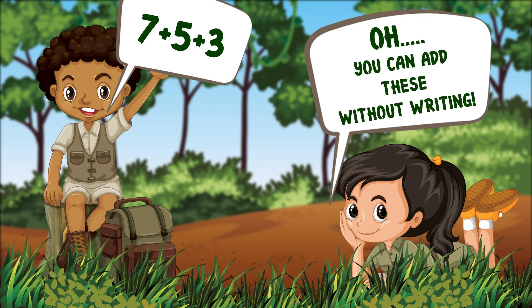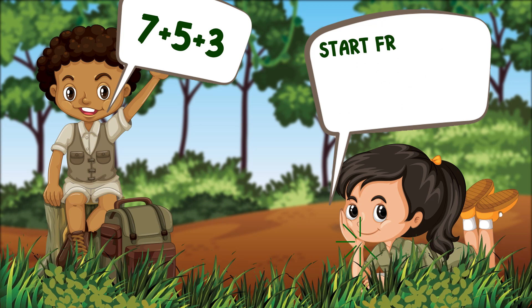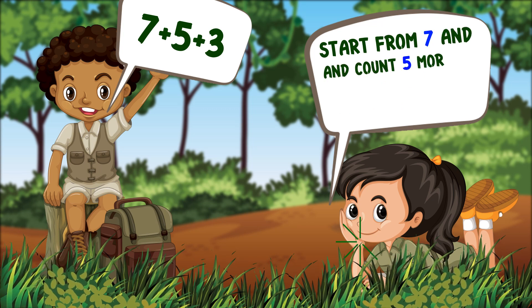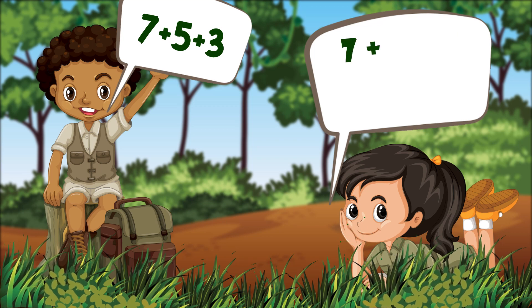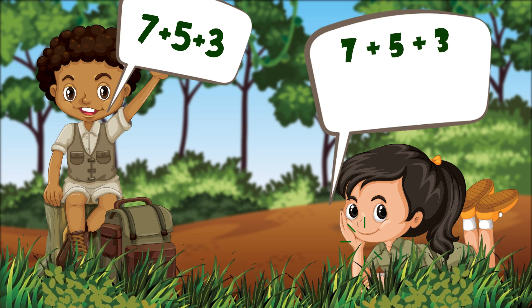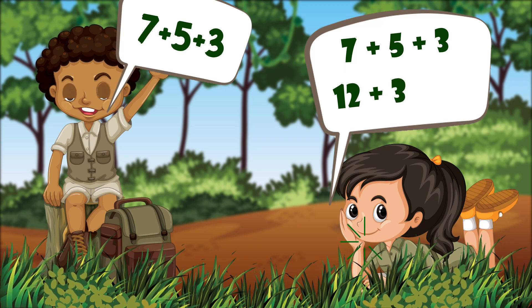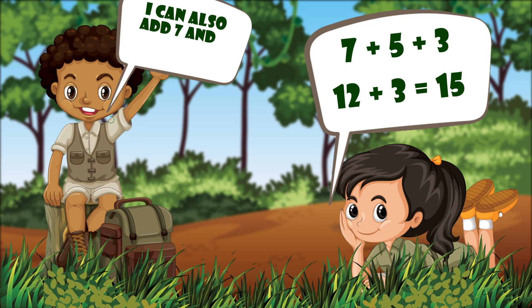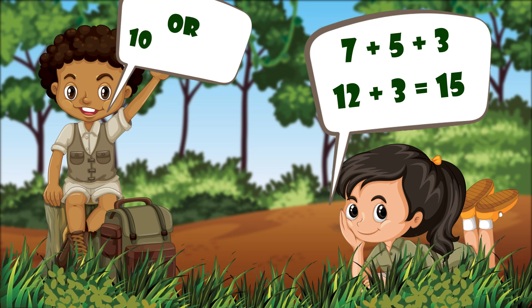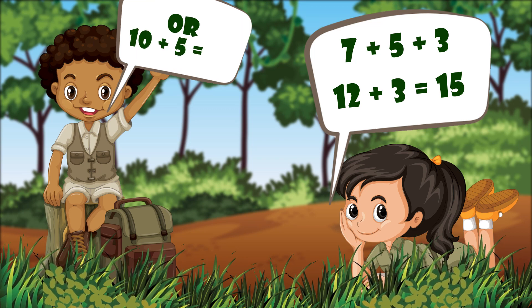Start from 7 and count 5 more to make 12, then add 3 more — you get 15. So 7 plus 5 plus 3, or 12 plus 3, is equal to 15. I can also add 7 and 3 first to get 10, and then add 5. So 10 plus 5 is equal to 15.